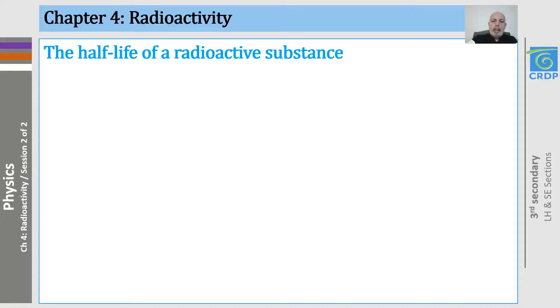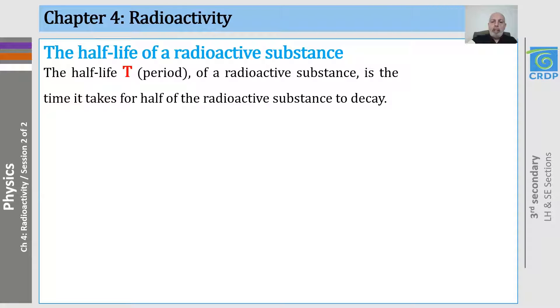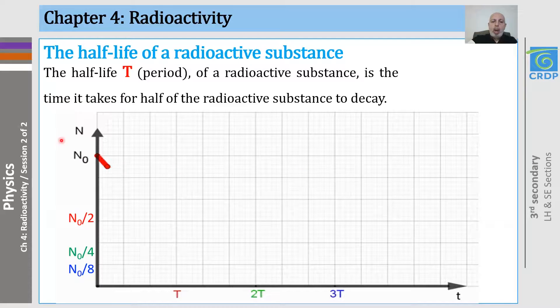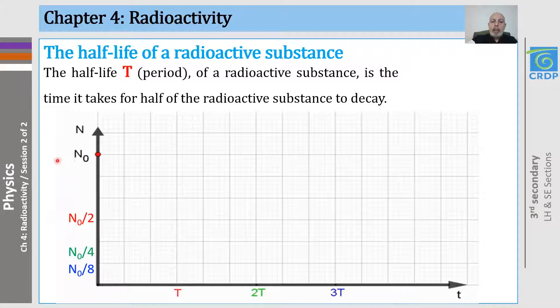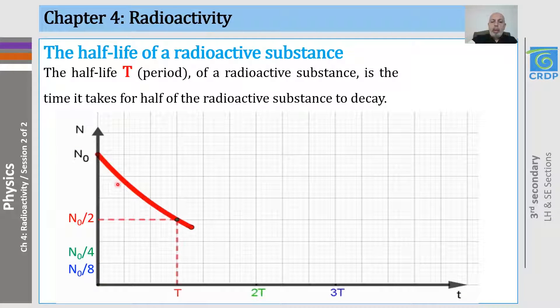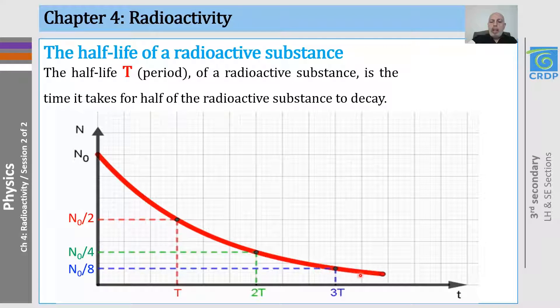Now, what is the half-life or period of a radioactive substance? It is the time it takes for half of the radioactive substance to decay. And to explain this, let's use this graph, in which we have the number of radioactive nuclei as a function of time. We will start with an initial number, n0 at t equals zero, and we notice how the number of nuclei is decreasing with time.